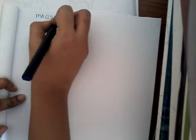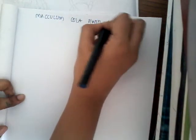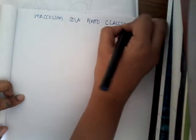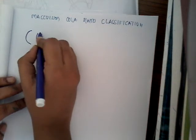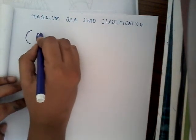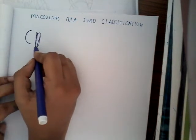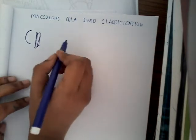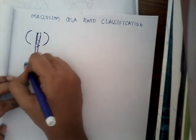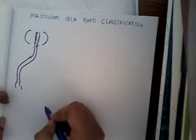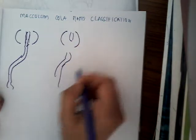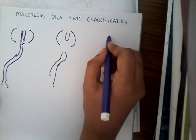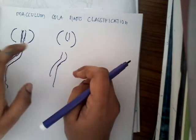The rupture of membranous urethra can be graded by a classification called the Colapinto classification. According to this classification, urethral injury is divided into three types. In Type 1, the prostatic urethra is elongated. In Type 2, the prostate is plucked off completely from the membranous urethra, with extravasation of urine above the sphincter — this is the floating prostate.